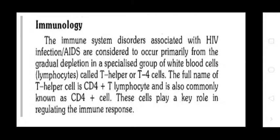Immunology: Immune system disorders associated with HIV infection result primarily from the gradual depletion of a specialized group of white blood cells — lymphocytes — called T-helper or T4 cells. The full name of T-helper cells is CD4+ T-lymphocytes, also commonly known as CD4+ cells. These cells play a key role in regulating the immune response.